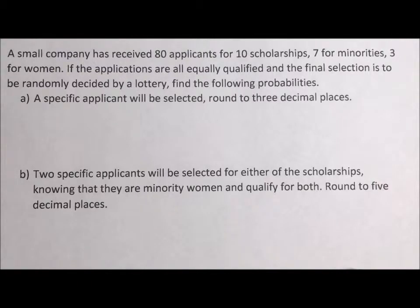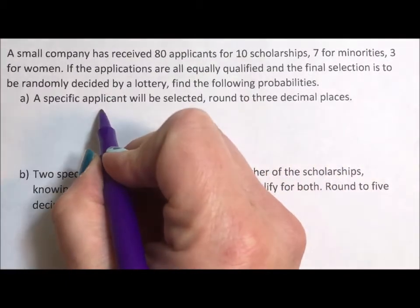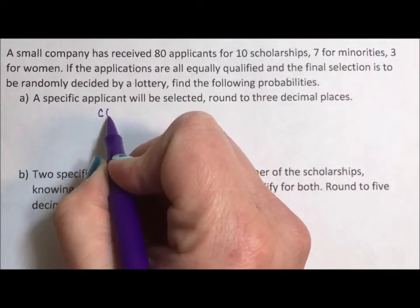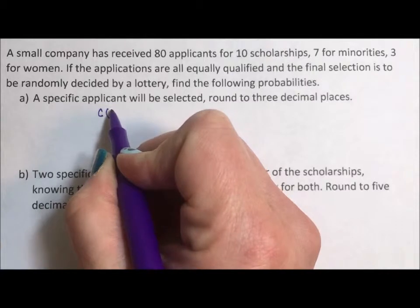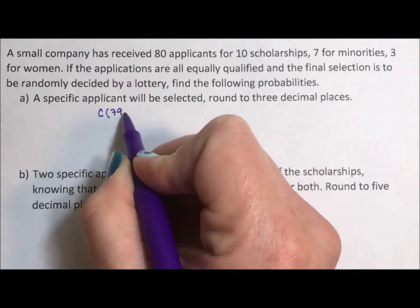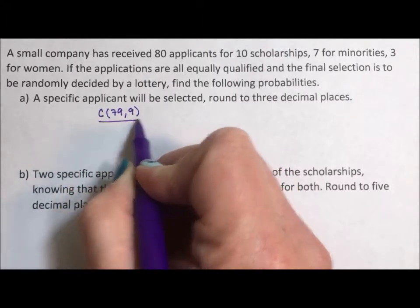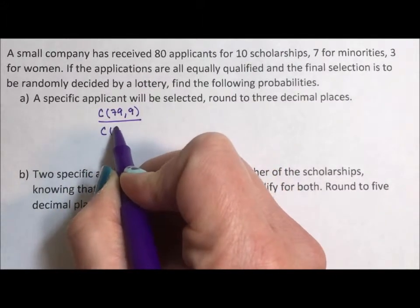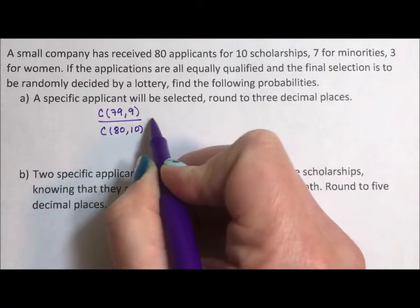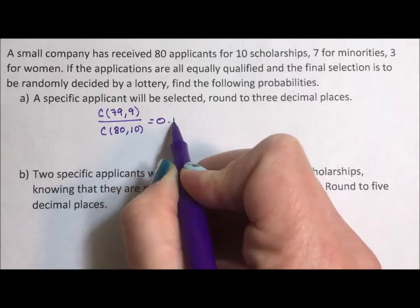A specific applicant will be selected — round to three decimal places. So if we know a specific applicant is going to be selected, that means really there's only nine applicants available. So it's really the combination of the remaining 79 applicants selected nine at a time, because there's nine applications left, divided by the original 80 taken 10 at a time. And this is 0.125.